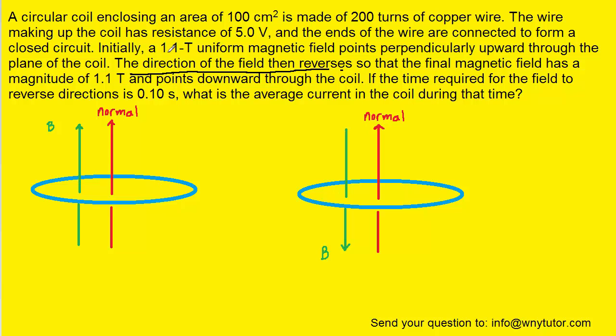Despite the directions changing, in both cases the magnetic field has a value of 1.1 tesla. From this picture, we can begin to look at the initial magnetic flux, and then also the final magnetic flux.